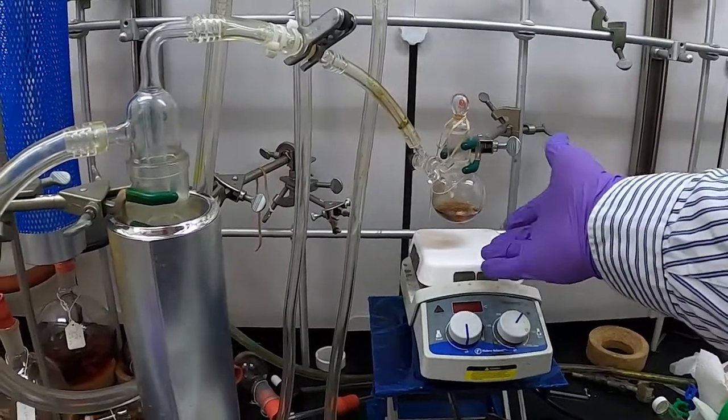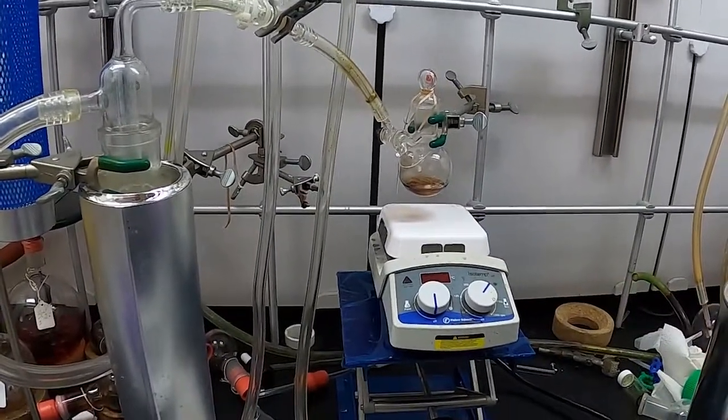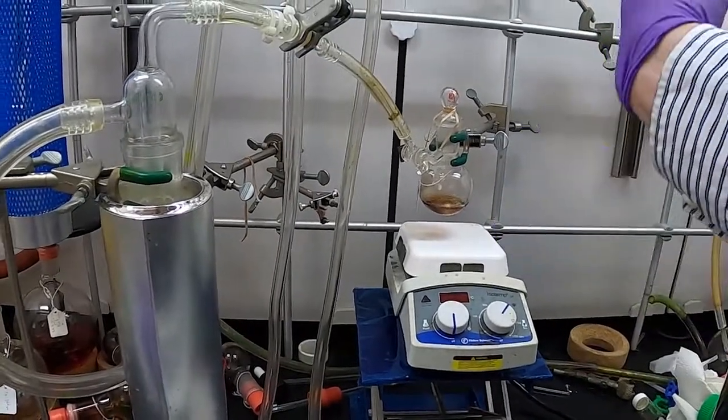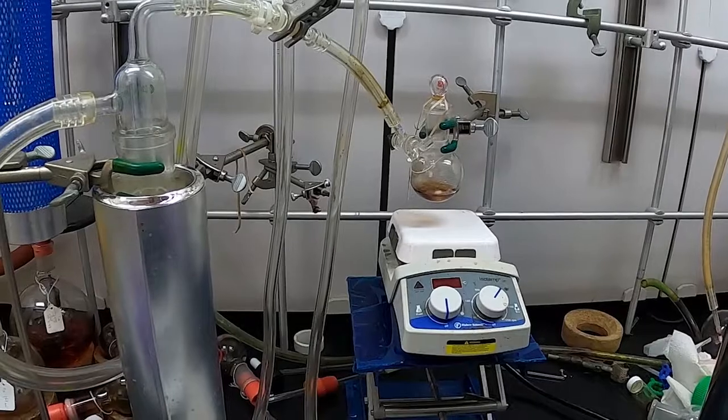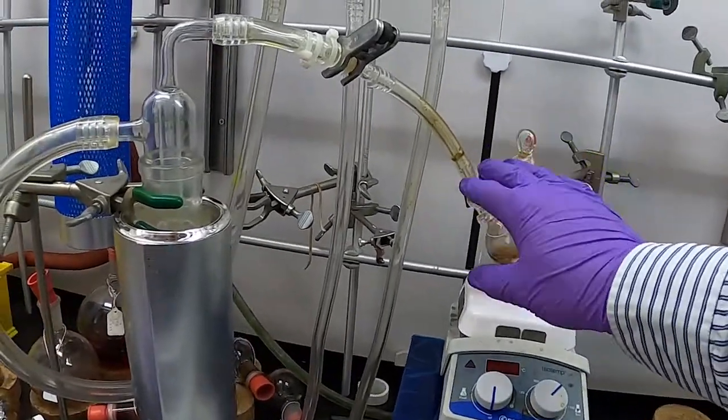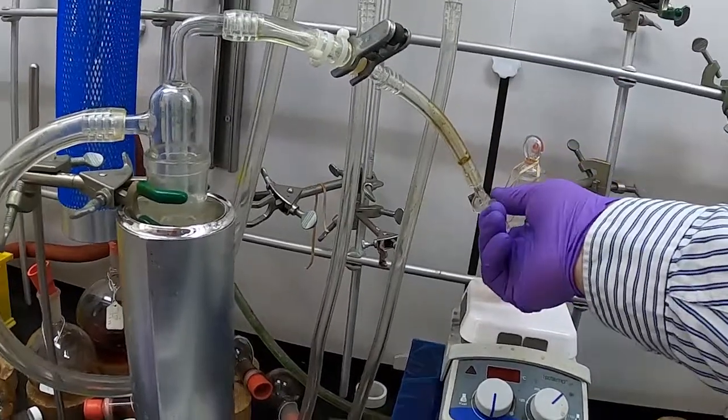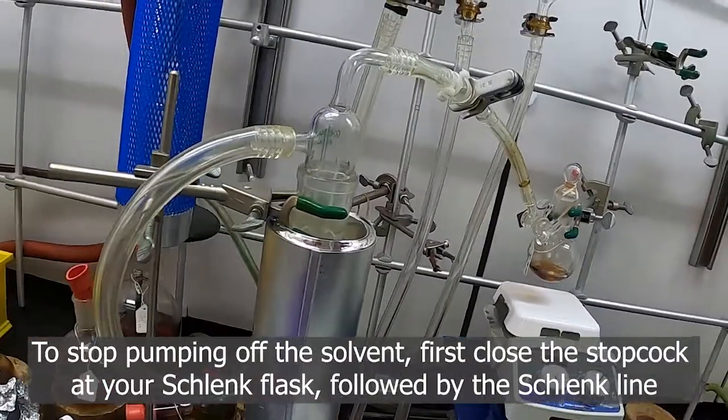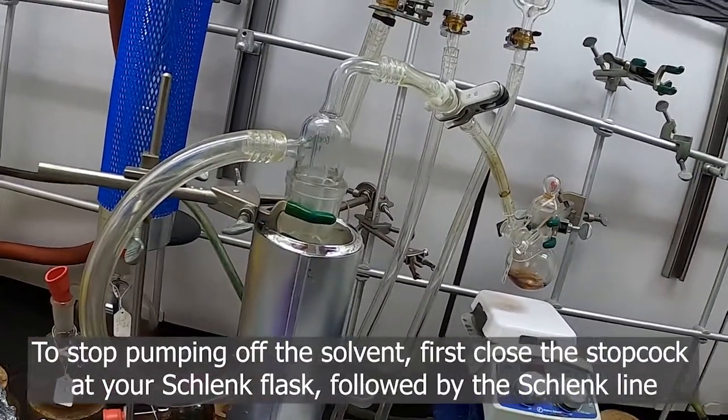We've now finished pumping this respective compound down. This one is mostly a liquid, so it didn't pump all the way down—we just pumped a small amount of solvent off. I've already closed this off here, so we were pumping all the way there. We can close it off now. To close off the vacuum, we work backwards. We close this off here.